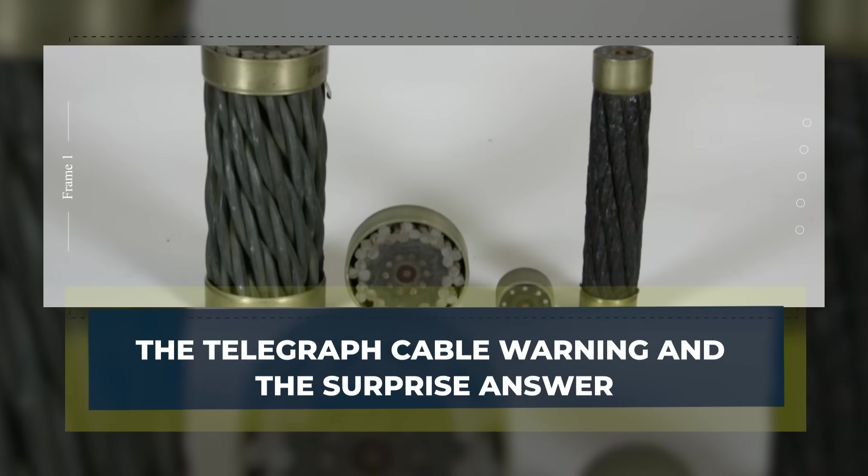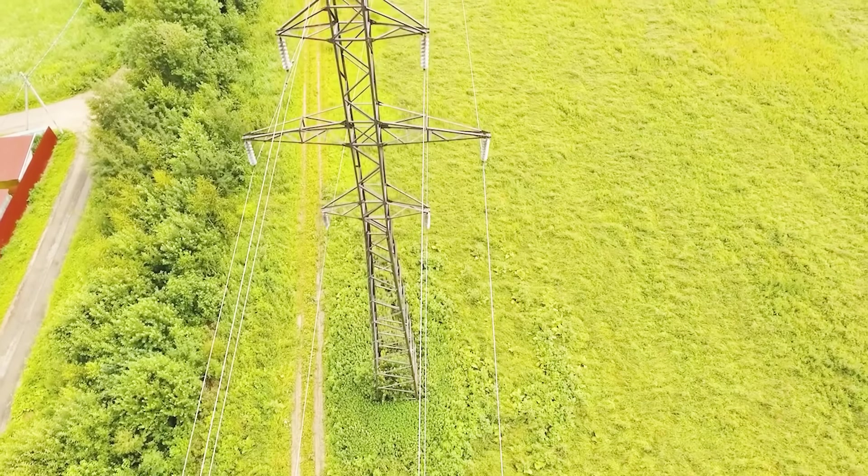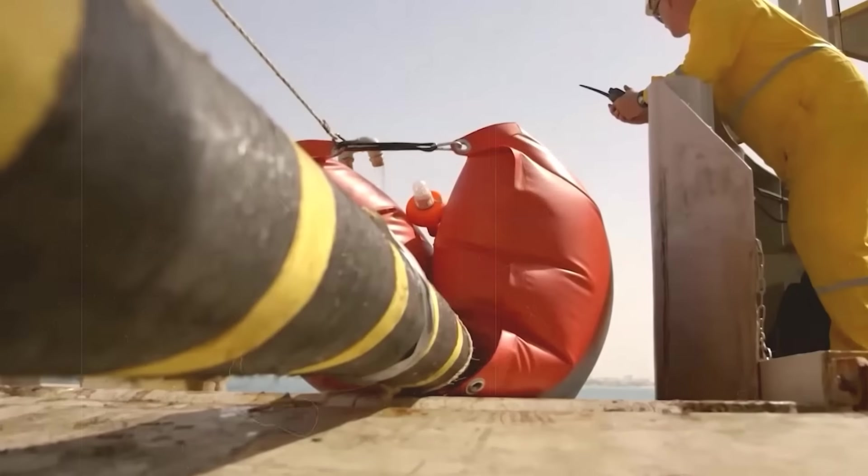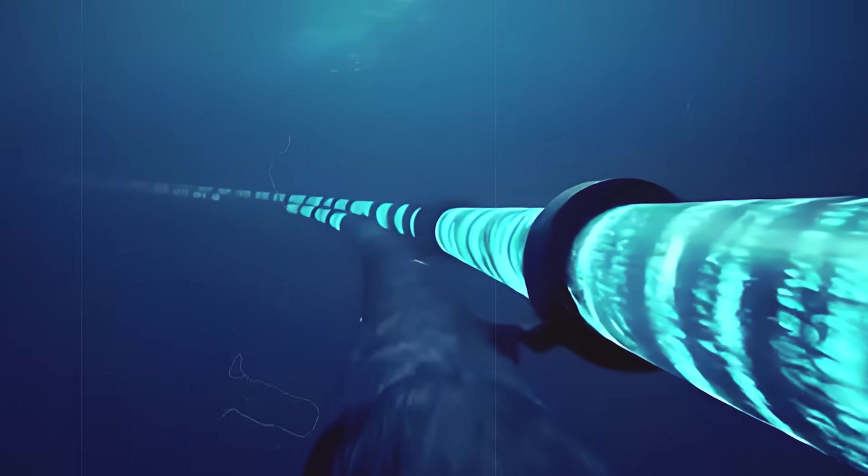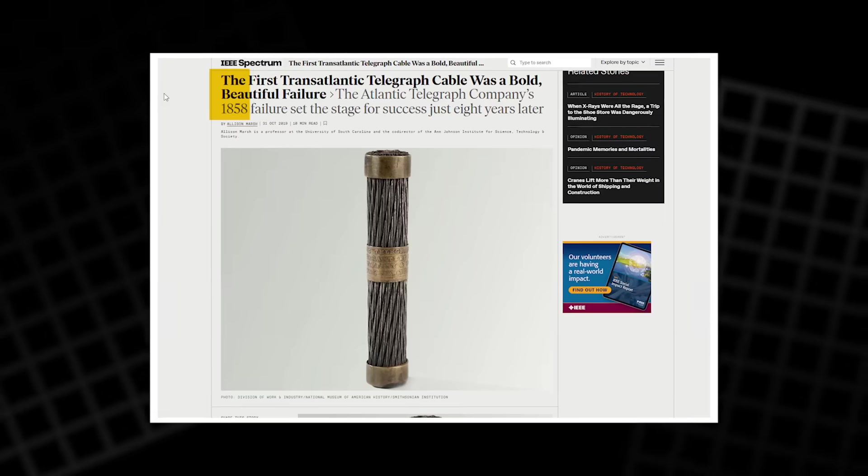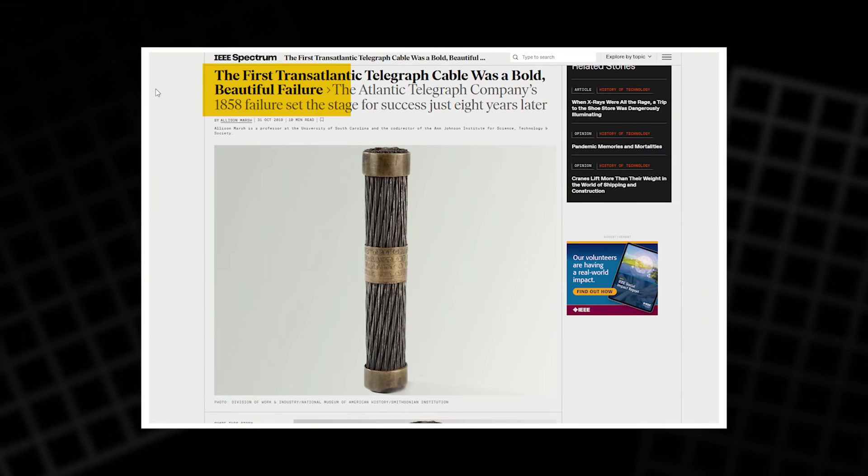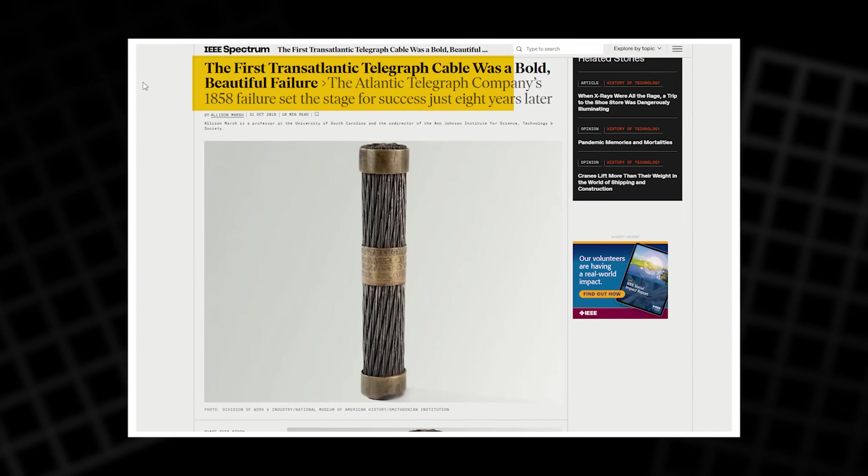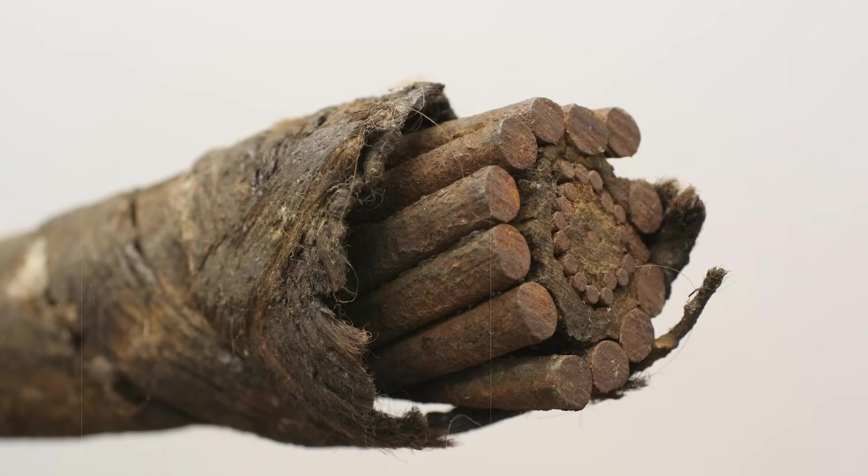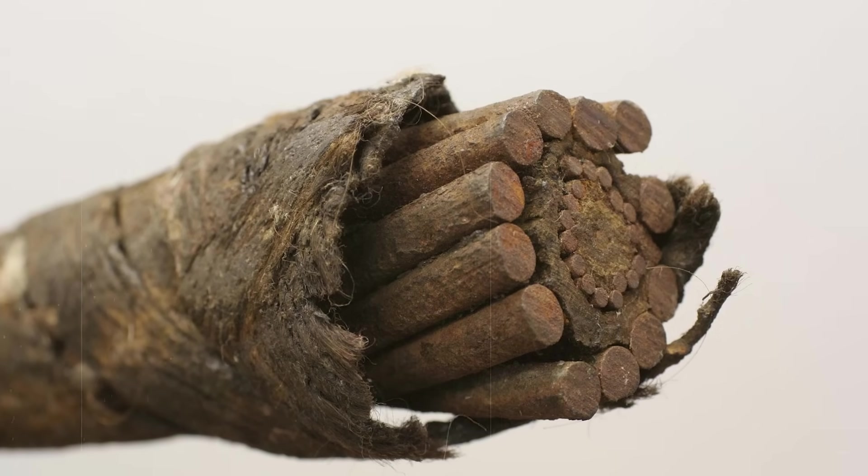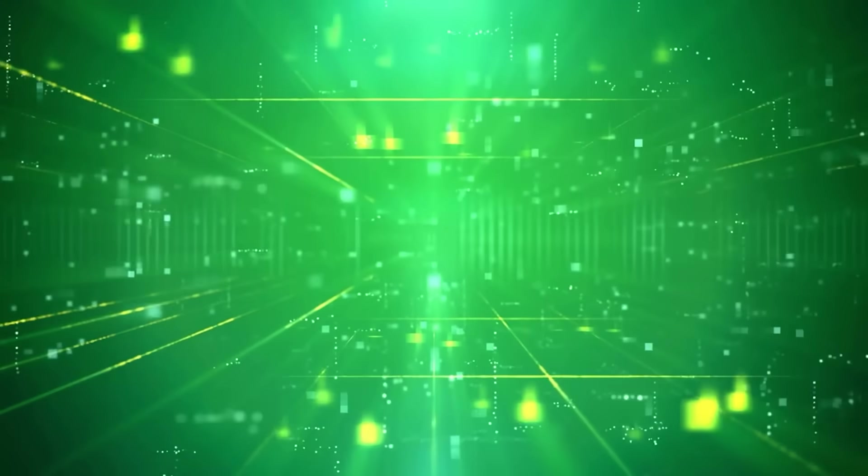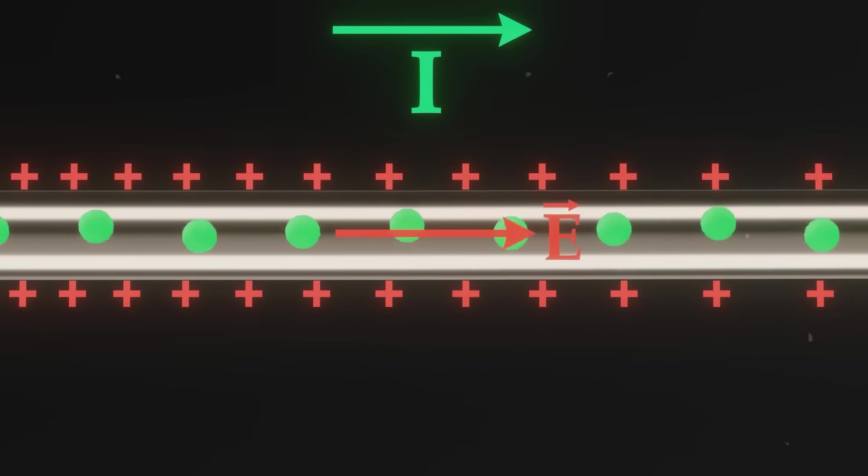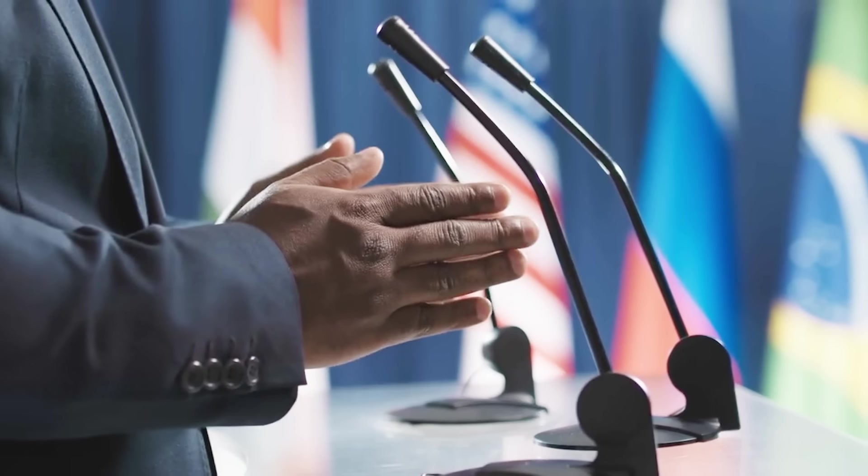The Telegraph Cable Warning and the Surprise Answer. The field view is not just theory. Engineers ran into it when they tried to send signals through very long undersea telegraph cables. The first transatlantic cable, laid in 1858, worked badly and did not last long. Pulses that began sharply arrived stretched and warped. Dots and dashes blurred, so messages slowed to a crawl. A debate followed.